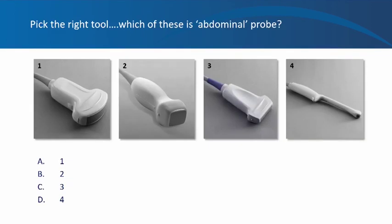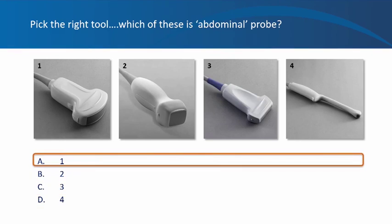The first question: pick the right tool. Which of these is the abdominal probe — is it the curvilinear probe, a squarish probe, a linear probe, or a longer one? The answer is number one: the curvilinear probe.